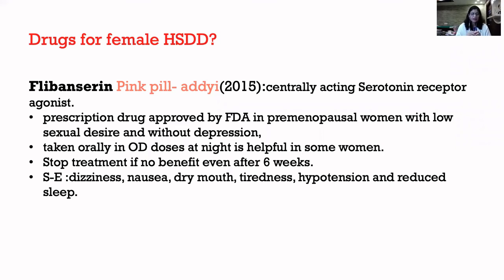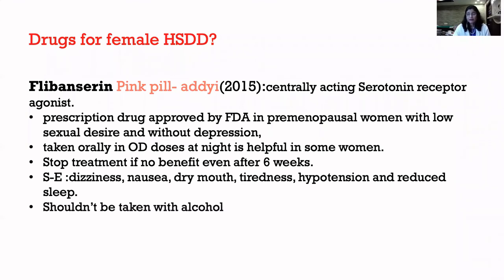This drug has a lot of side effects — it can cause low blood pressure, which is why it must be taken only at night. It causes reduced sleep, nausea, and dizziness. Alcohol is also contraindicated, which is problematic because people usually get into the mood after having alcohol. DCGI has not yet given approval, though it is manufactured in India by a Hyderabad company and is available online. It is approved by the FDA for treatment of female hypo-sexual desire disorders.